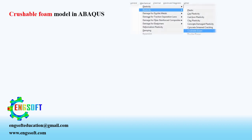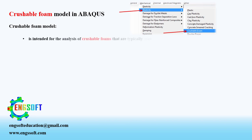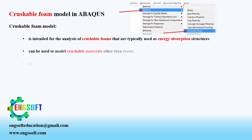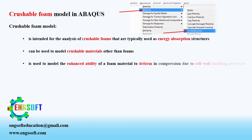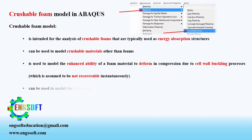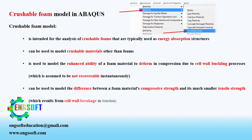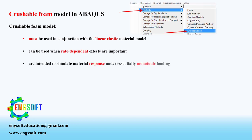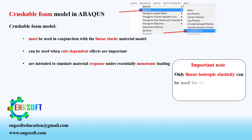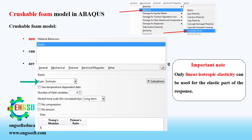Another class of foam materials is crushable foams, which undergo permanent deformation. The crushable foam model is intended for the analysis of crushable foams typically used as energy absorption structures. It can be used to model crushable materials other than foams, and models the enhanced ability of a foam to deform in compression due to cell wall-buckling processes. It can also model the difference between a foam material's compressive strength and its much smaller tensile strength. It must be used in conjunction with the linear elastic material model, can account for rate-dependent effects, and is intended for essentially monotonic loading. Only linear isotropic elasticity can be used for the elastic part of the response.